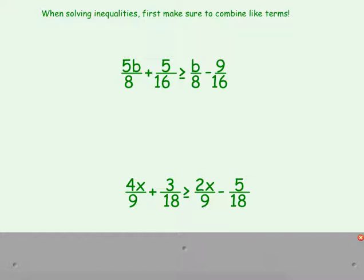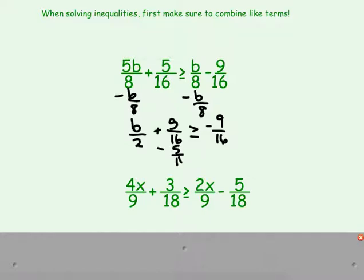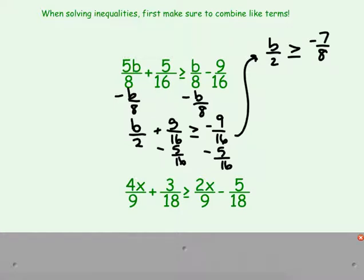The first option is to work with common denominators. We move our variables to the left side by subtracting b over 8, and we get 4b over 8, which reduces to b over 2. So b over 2 plus 5 over 16 is greater than or equal to negative 9 over 16. Subtracting 5 over 16 from each side, we get b over 2 is greater than or equal to negative 14 over 16, which reduces to negative 7 over 8. Since b is divided by 2, we multiply each side by 2, giving us b is greater than or equal to negative 7 over 4. We graph that with a closed dot on negative 7 fourths going to the right.